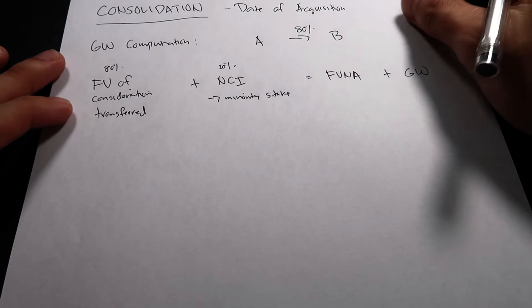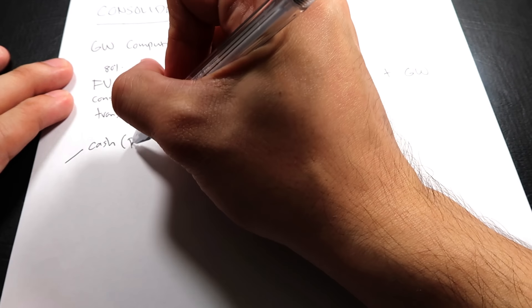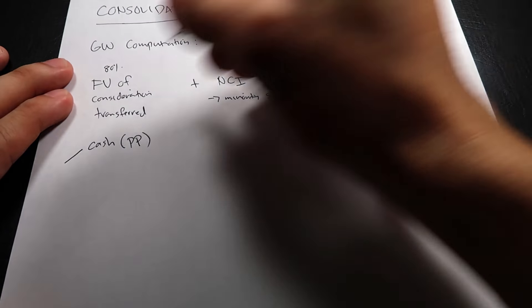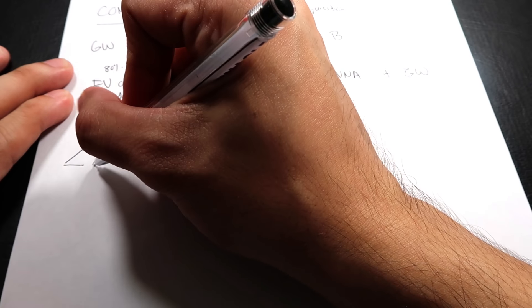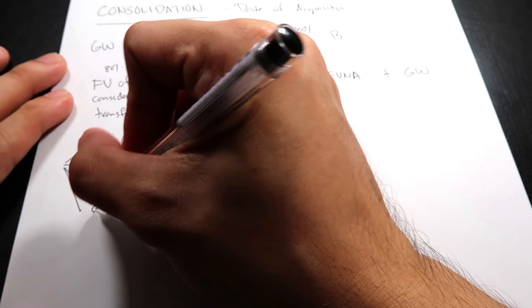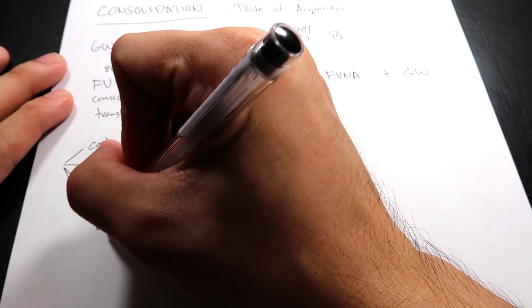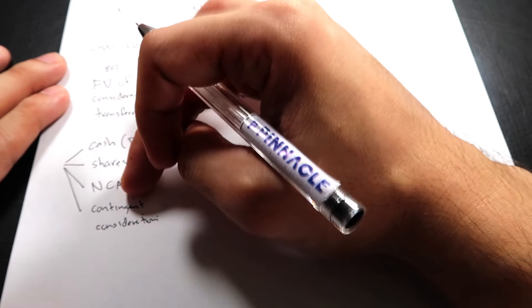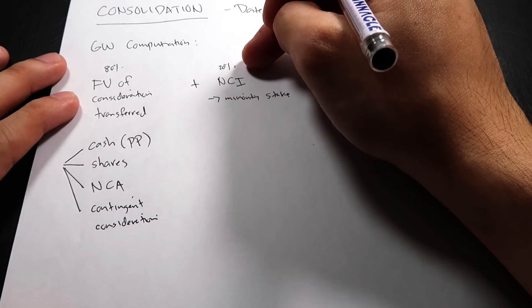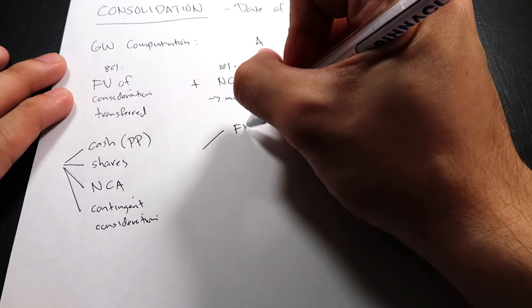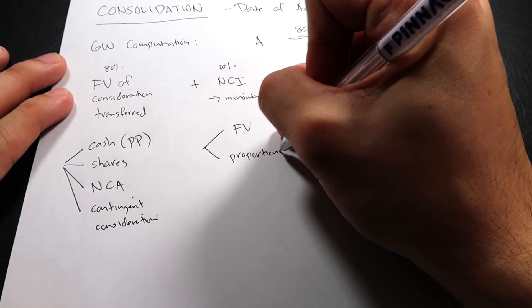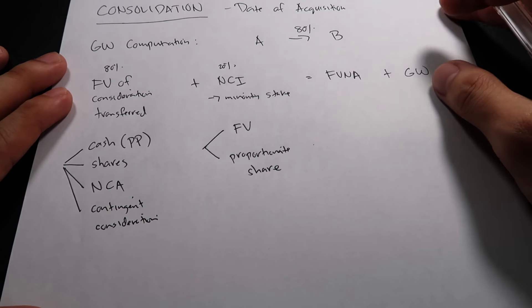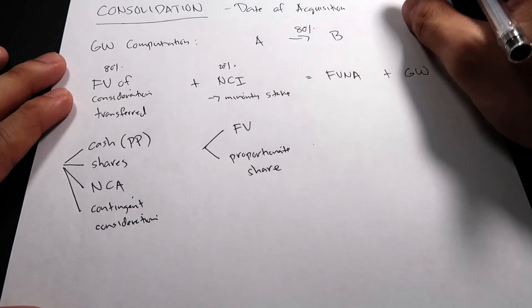What do you mean by fair value of consideration transferred? This can be cash payment — also called the price paid — or the parent can also pay using shares, or non-cash assets, and don't forget there can also be a contingent consideration. So the fair value of consideration transferred can consist of cash, shares, non-cash assets, and contingent consideration. NCI, on the other hand, can be valued at fair value or at proportionate share.